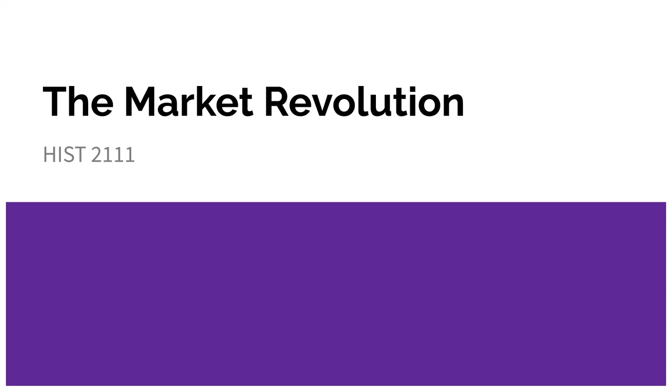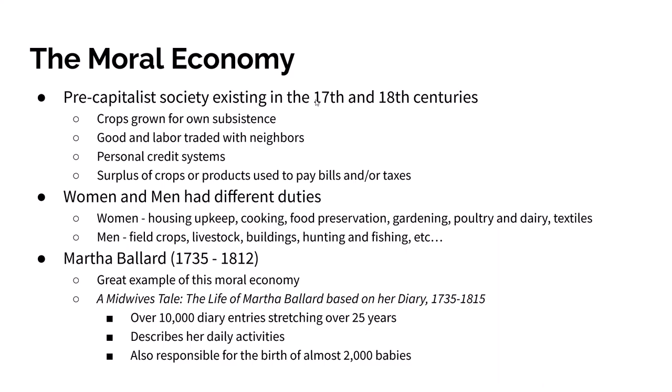Our second lecture is called the Market Revolution. Before capitalism, you had something called the moral economy. The easiest way to understand it: you are not in it for profit, you are in it to survive. You're growing food for your own use, trading goods and labor and services with your neighbors. If you have extra leftover, you sell that just to pay your bills — you're not worried about making money, you're worried about just living.